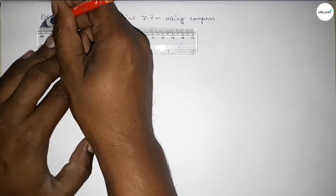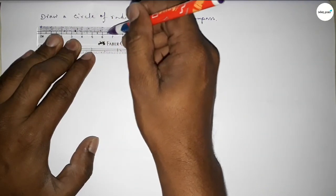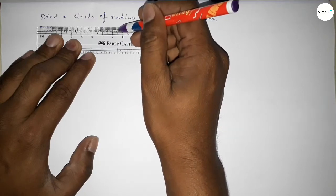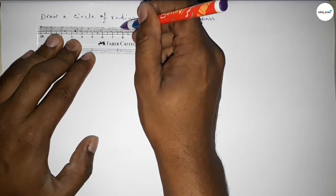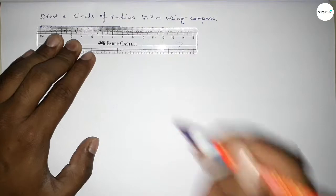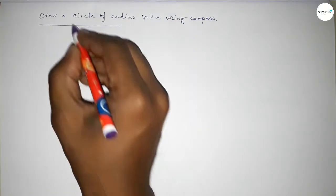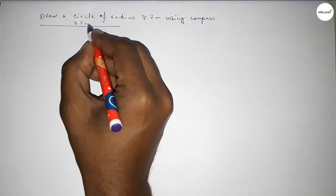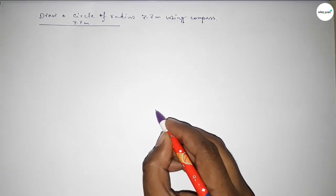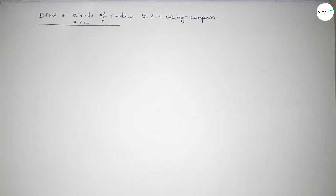So this is starting: 0, 1, 2, 3, 4, 5, 6, 7, 7.5, 6, 7... so this is 7.7 centimeters. First, draw a line of length 7.7 centimeters. Now take a point here.